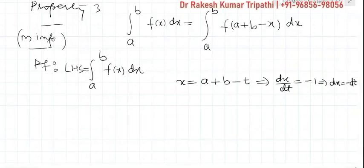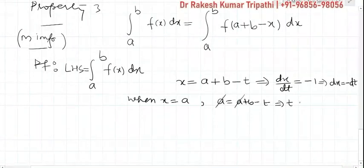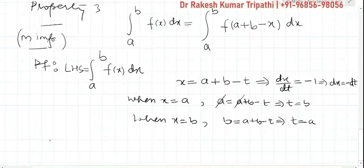Now let us discuss the limits. When the lower limit x = a: a = a + b − t, the a's cancel, giving t = b. And when x = b: b = a + b − t, the b's cancel, so t = a. Therefore the left hand side transforms with new limits from b to a.